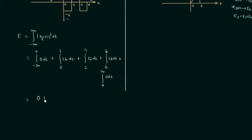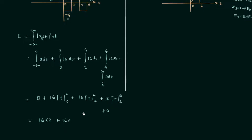The integration is straightforward. The first and last integrals give zero. From the second integral we get 16·[t] from 0 to 2, giving 16×2 = 32. From the third integral, 16·[t] from 2 to 4, giving 16×2 = 32. From the fourth integral, 16·[t] from 4 to 6, giving 16×2 = 32. So we have 32 + 32 + 32 = 96.